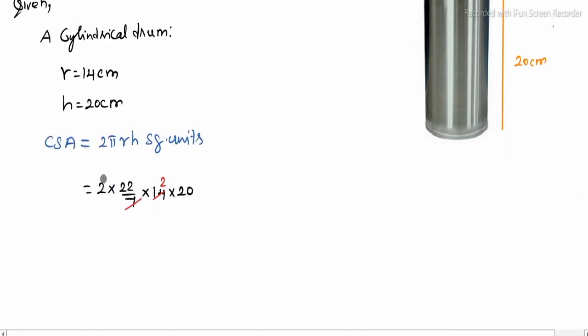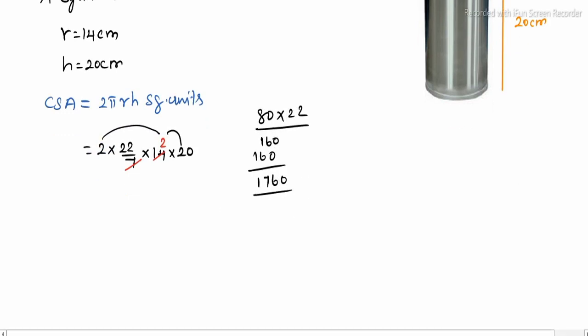Let us see: 2 twos are 4, 4 twenties are 80 into 22. So 2 multiply: 1, 60, 1, 60. So 1, 7, 6, 0. Finally we get 1,760. The unit is centimeter square. So the curved surface area is 1,760 centimeters square.